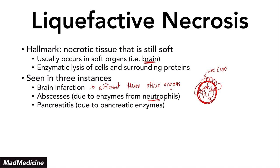We also have pancreatitis — very high yield because pancreatitis is very common. When you go into the clinical setting, you'll see many patients coming in for acute or even chronic pancreatitis. In pancreatitis, the pancreatic enzymes autodigest the pancreas, and that autodigestion leads to liquefactive necrosis of the pancreas itself. It's similar to an abscess, except in an abscess it's mediated by white blood cells releasing enzymes. In pancreatitis, the pancreatic duct is blocked — whether by a gallstone or alcohol — so it can't secrete enzymes further, and backflow leads to the enzymes autodigesting the pancreas.